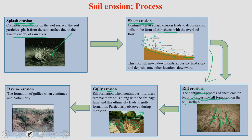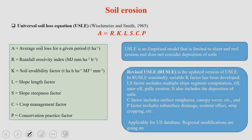Finally, we come to ravine erosion. When the formation of these gullies continues, they become ravine erosion — a much larger form of gully erosion. This is the way soil erosion takes place under the impact of different factors.